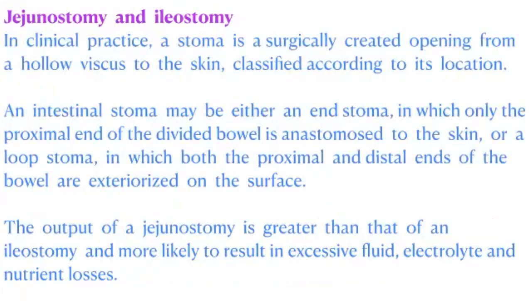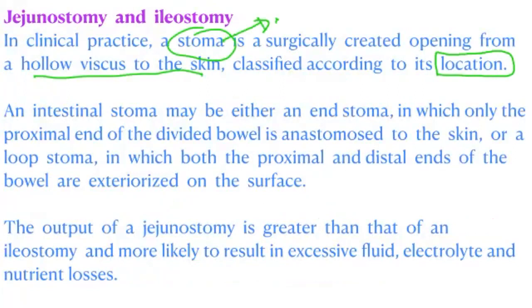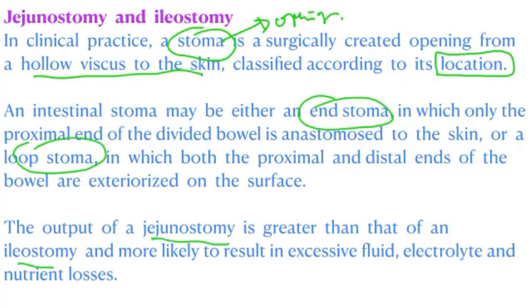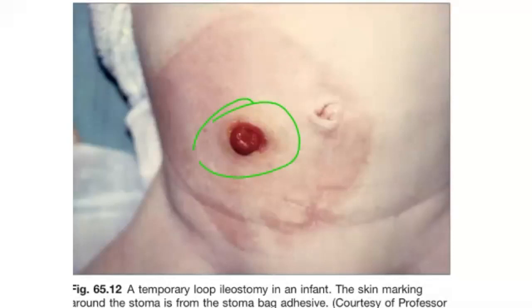Jejunostomy and ileostomy: in clinical practice, a stoma is a surgically created opening from a hollow viscus to the skin, classified according to its location. An intestinal stoma may be either an end stoma, in which only the proximal divided bowel is anastomosed to the skin, or a loop stoma, in which both proximal and distal ends of the bowel are exteriorized on the surface. The output of a jejunostomy is greater than that of an ileostomy and more likely to result in excessive fluid, electrolyte, and nutrient losses.